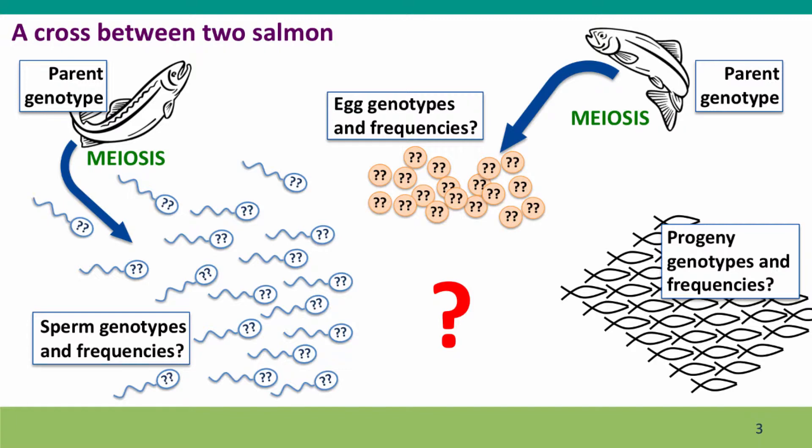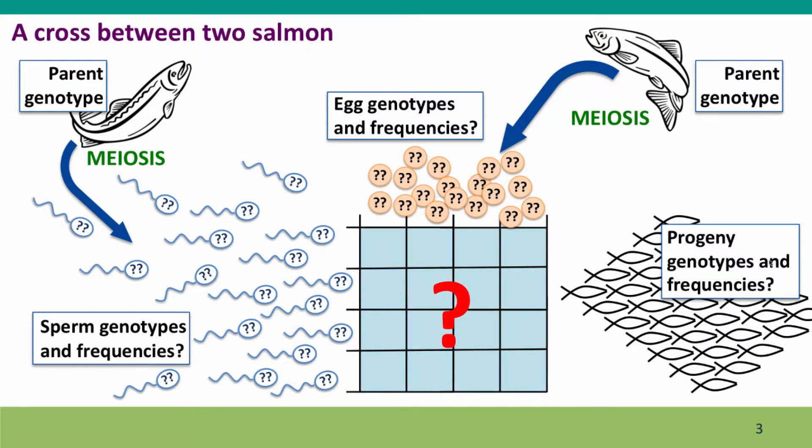So here's our cross that we diagrammed in the previous lecture with fish producing large pools of gametes that are allowed to mix together, come together randomly, and give the progeny genotypes. And the way we're going to illustrate how the gametes come together is using this square, which is called a mating square, or sometimes a Punnett square.